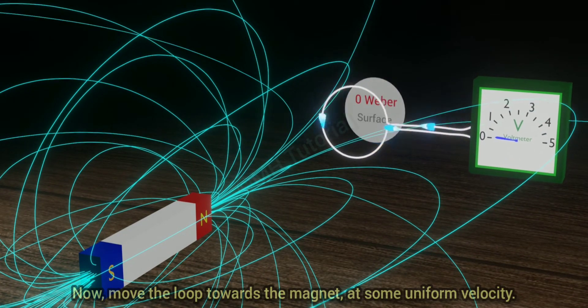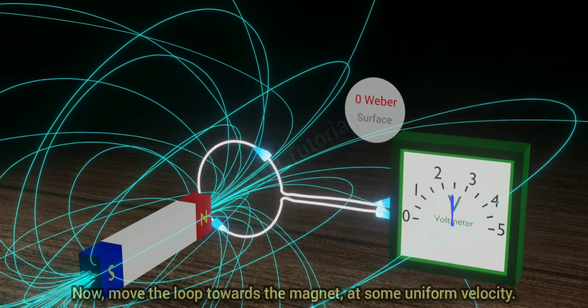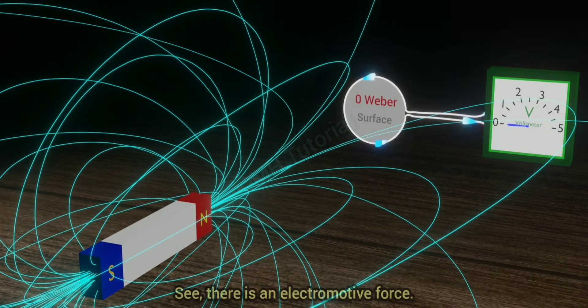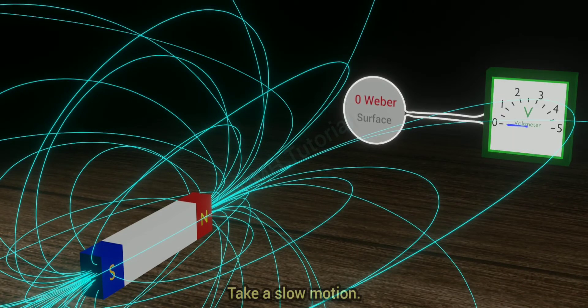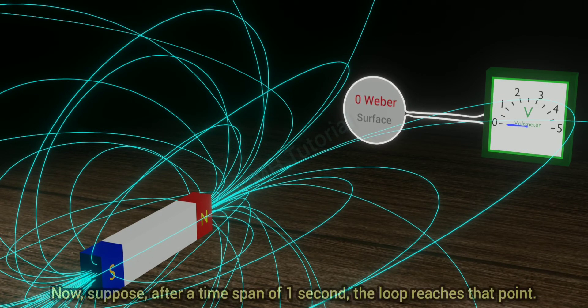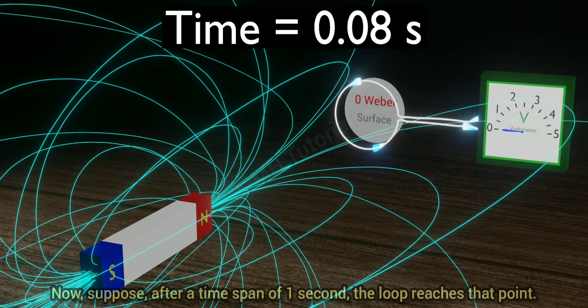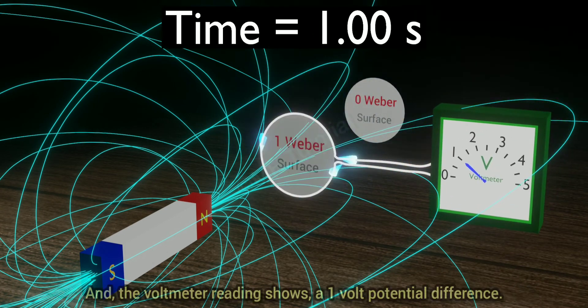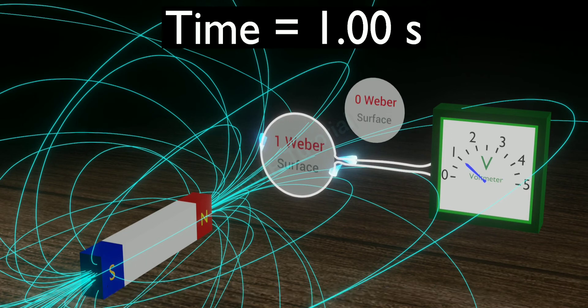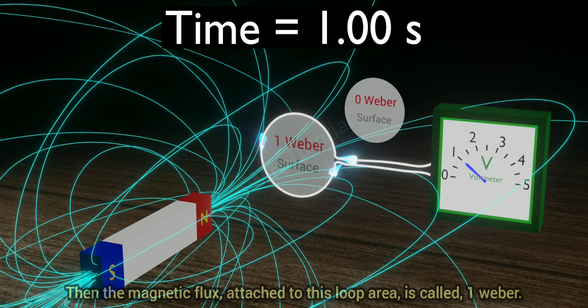Now move the loop towards the magnet at some uniform velocity. See there is an electromotive force. Take a slow motion. Now suppose after a time span of one second the loop reaches that point and the voltmeter reading shows a one volt potential difference. Then the magnetic flux attached to this loop area is called one Weber.